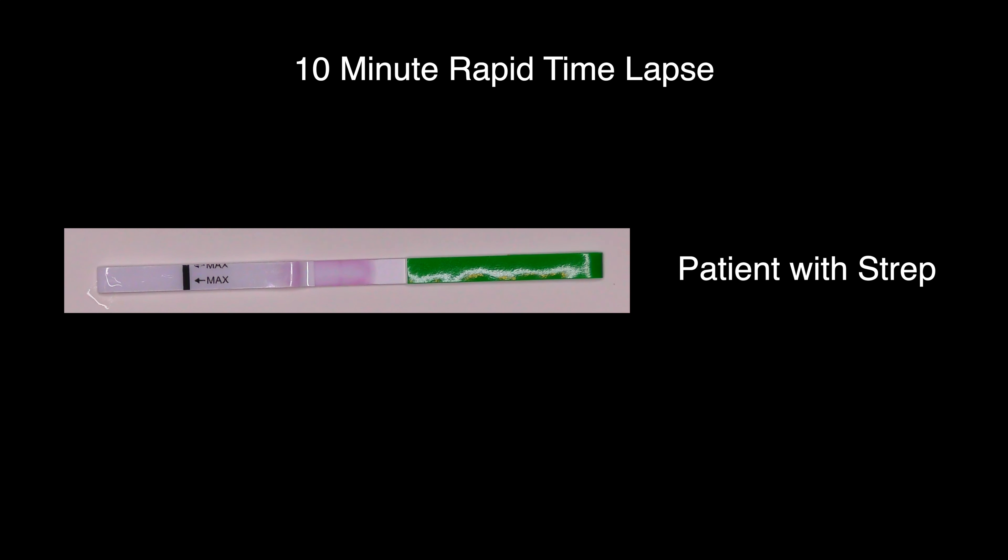Here is a 10 minute rapid time lapse showing a positive strep test result. The red arrow points to the control to ensure the test is valid. If this red band is absent, any test results would be considered erroneous and needs to be repeated.